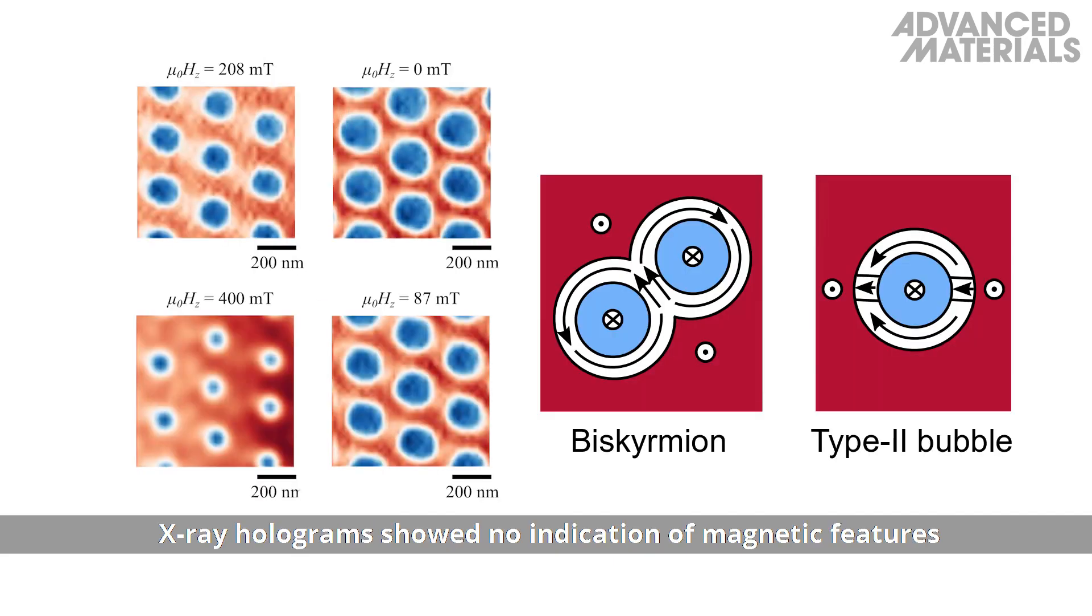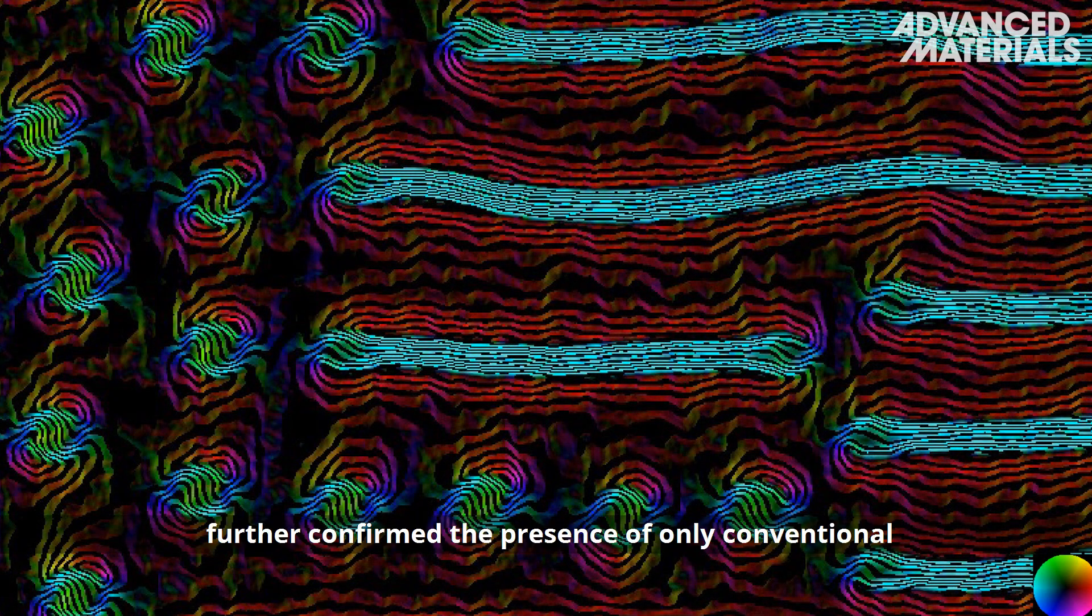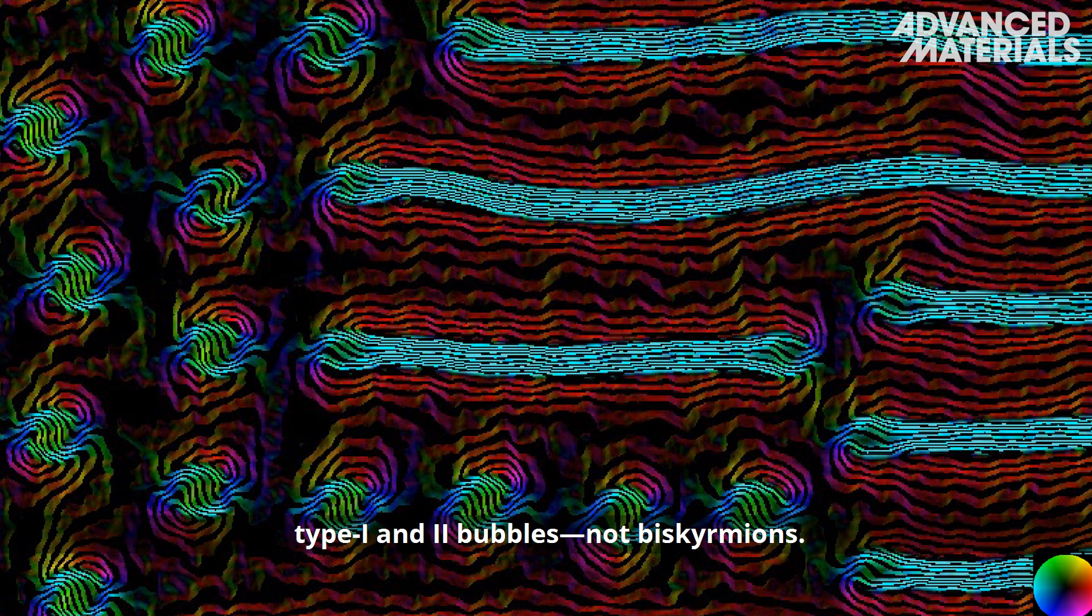X-ray holograms showed no indication of magnetic features with the double core that would be expected from a biskyrmion. Electron microscopy images and micro-magnetic simulations further confirmed the presence of only conventional type 1 and 2 bubbles, not biskyrmions.